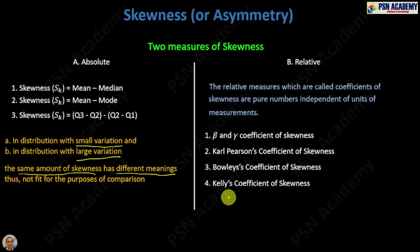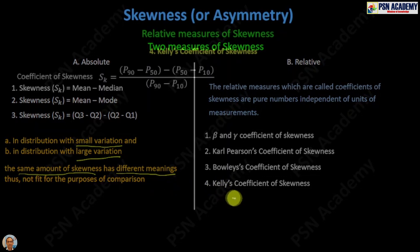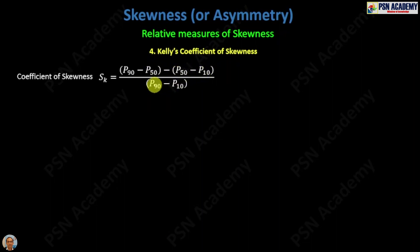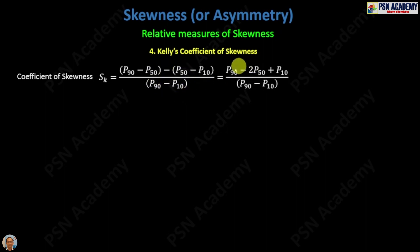Kelly's coefficient of skewness depends on percentiles, and the formula is: P90 minus P50, minus P50 minus P10, divided by P90 minus P10. That is, the 90th percentile minus the 50th percentile, minus the 50th percentile minus the 10th percentile, all divided by the 90th percentile minus the 10th percentile. If you simplify this, you will get a cleaner expression.